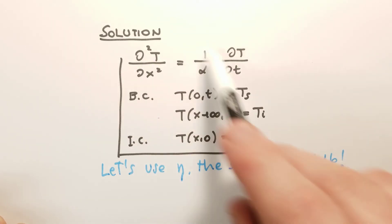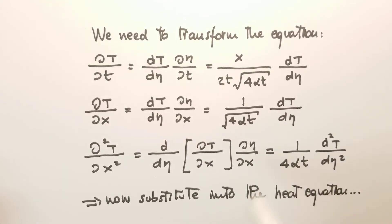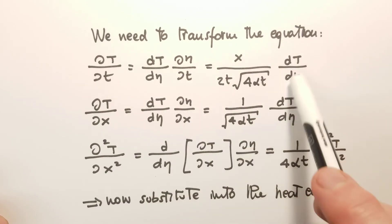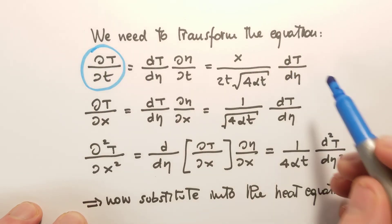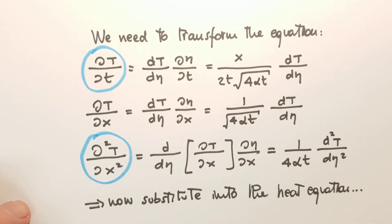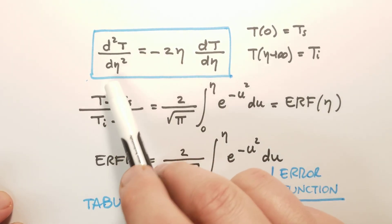We use the similarity variable to transform and simplify this system. We perform a change of variables for the partial derivative with respect to time and the second derivative with respect to x. After substituting into the heat conduction equation, everything simplifies out. The beauty of this transformation is that we now have an ODE — the temperature depends only on eta. The boundary conditions also simplify: temperature at eta equals zero is Ts, and temperature as eta goes to infinity is Ti.